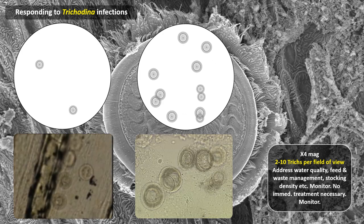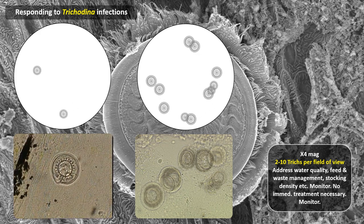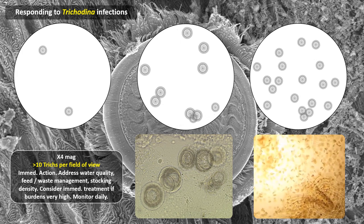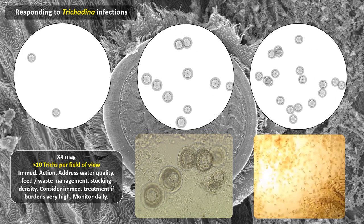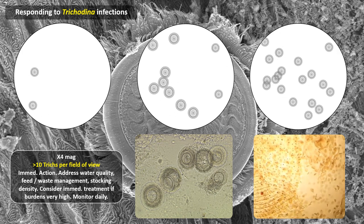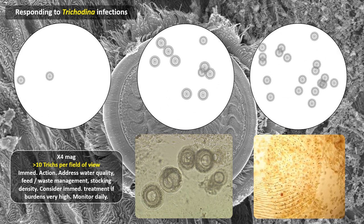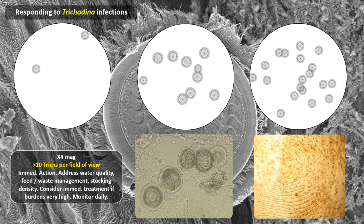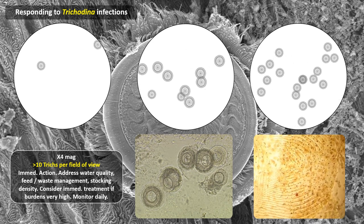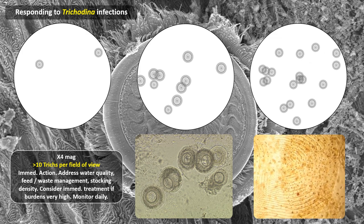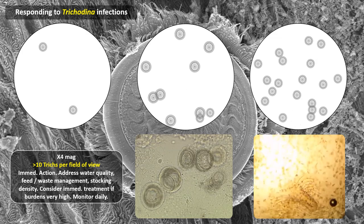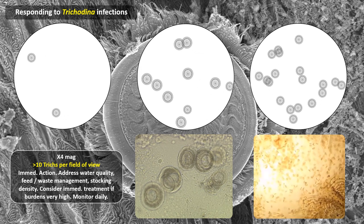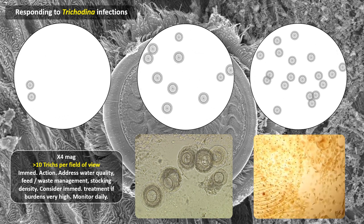Remember that trichodina numbers will increase quickly in organic-rich waters. If you start seeing over ten trichodina per times four field of view, or very high numbers like this, then immediate action is needed. Again, address water quality, waste management, check feed regimes and reduce stocking density. A treatment may be required — please seek veterinary advice, as the choice of treatment regime will depend on several factors including the size of fish, their biomass and the level of existing tissue damage.